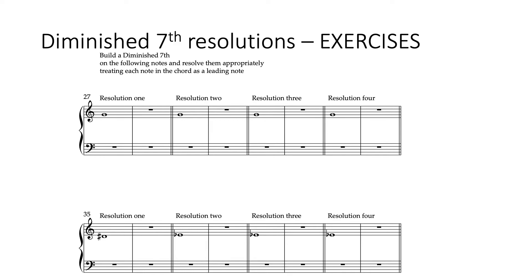So here are some exercises. I've given you two notes: a G and an E flat slash D sharp. What I'd like you to do is write out a diminished seventh chord on each of these notes — write out a diminished seventh chord on G and on D sharp slash E flat — and then resolve those diminished sevenths, treating each note in the chord as a leading note. If you want, you can pause the video here, have a go at these exercises, and then I'll reveal the answers.